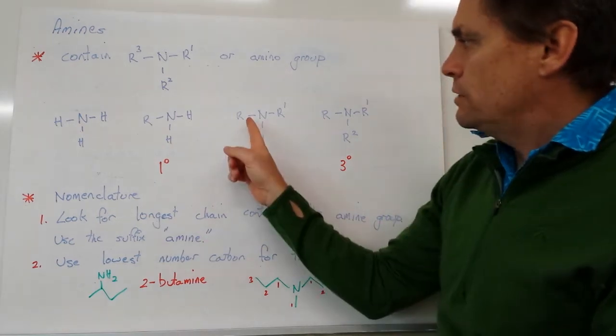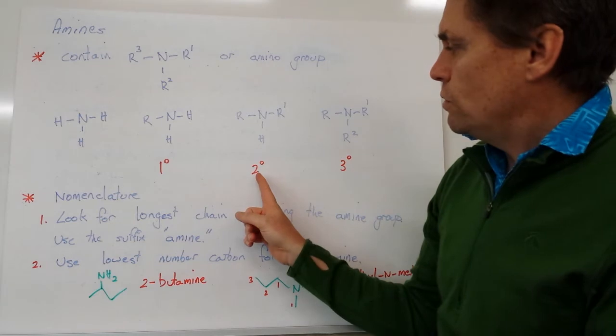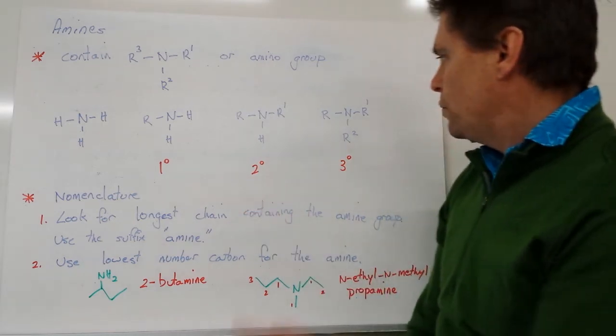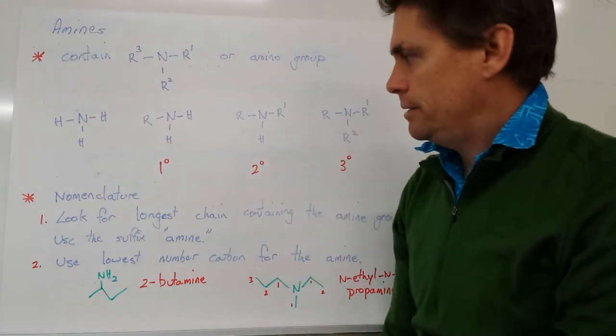If we replace two of the hydrogens with two carbon chains, we form what's known as a secondary amine. And if we replace all three hydrogens, we form what's known as a tertiary amine.